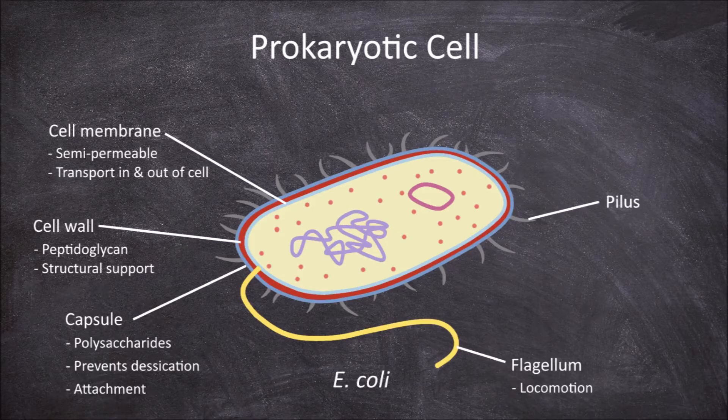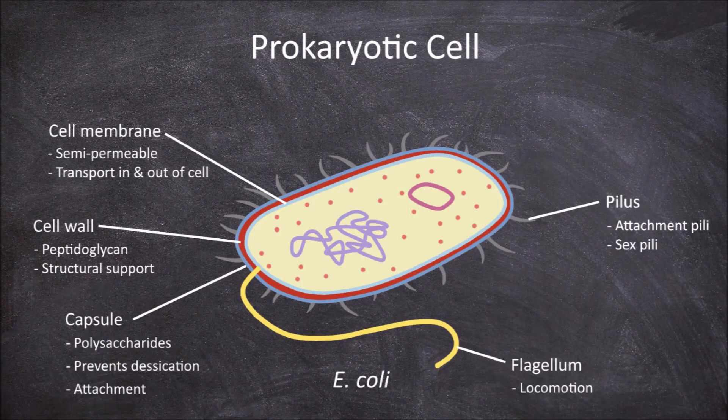There are two kinds of pili that have separate functions. Attachment pili, which function in helping the bacteria adhere to a surface. And sex pili, that help in bacterial conjugation where they swap DNA with one another.